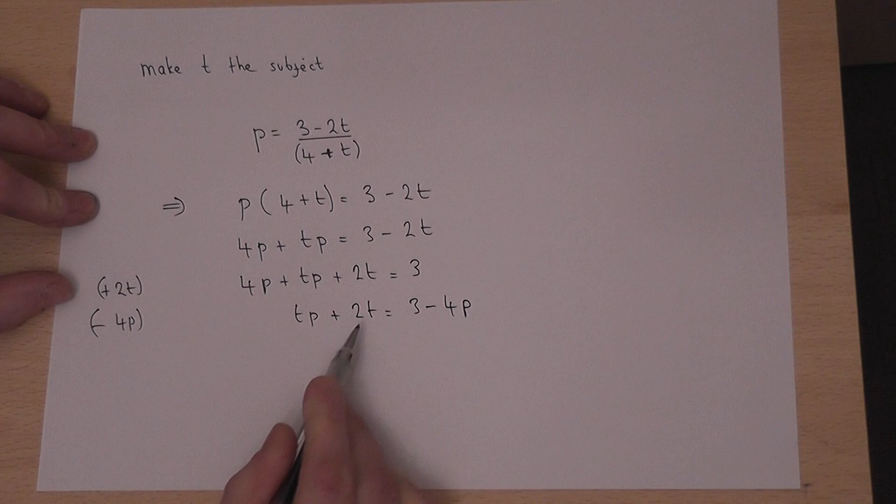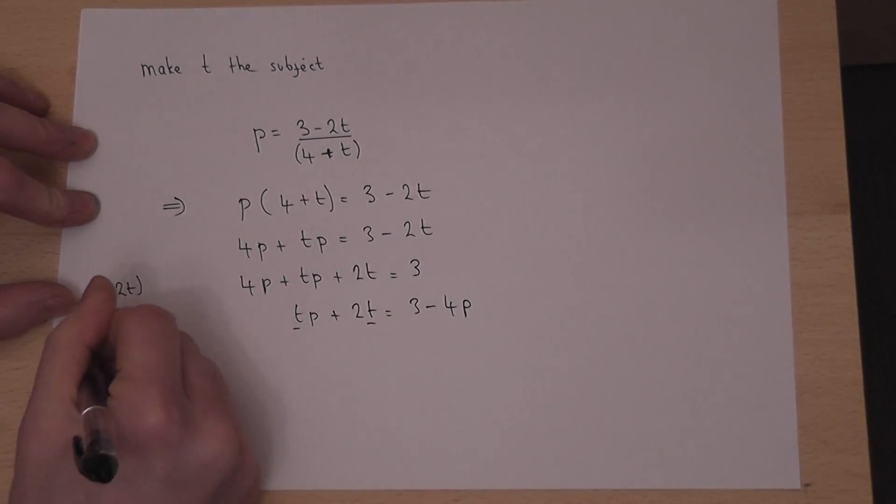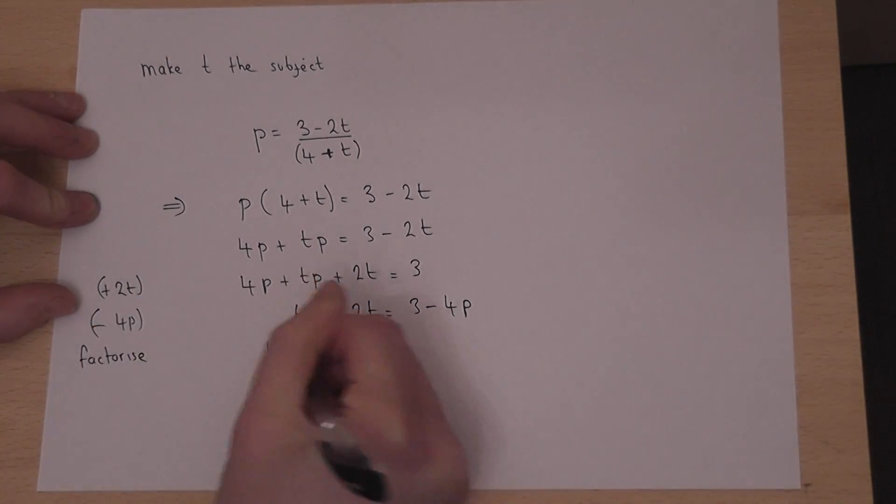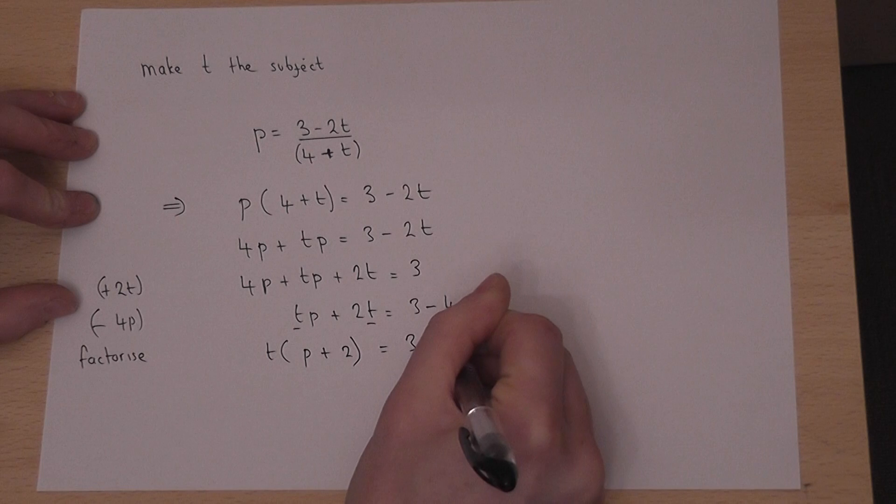So the t's are now on the left-hand side, but they occur in two terms, so I can factorise. So t is a common factor. A p plus a 2 must equal 3 take away 4p.